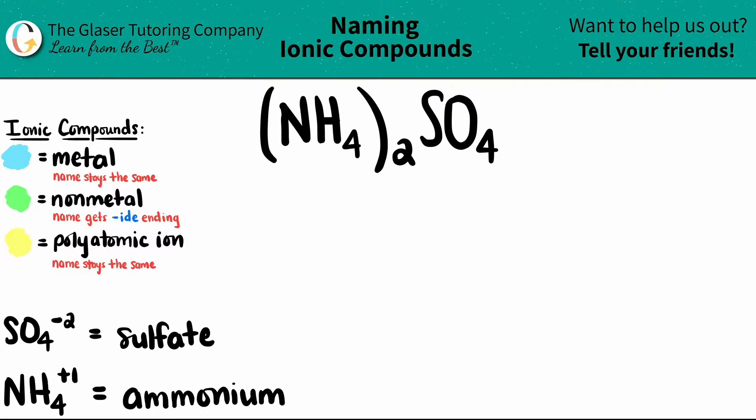Today we're going to find the name for the ionic compound (NH4)2SO4. Whenever you see three or more elements in your ionic compound, you know you're dealing with at least one polyatomic ion.